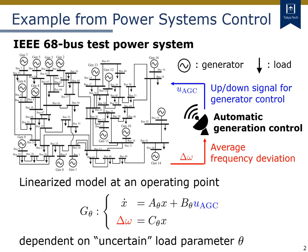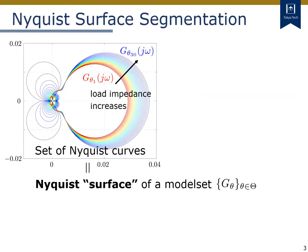This parameter θ represents the distribution of uncertain loads. As you can imagine, the input-output property of the power system model can vary with the variation of the uncertain load parameter θ. This figure shows the Nyquist plots of the linearized power system model with 30 different load parameters. From this figure, we can see that if the load impedance increases, then the Nyquist curve of the linearized model expands. This means that the gain of the linearized model increases as the load increases.